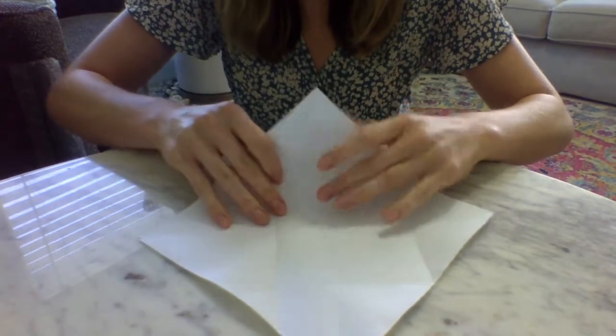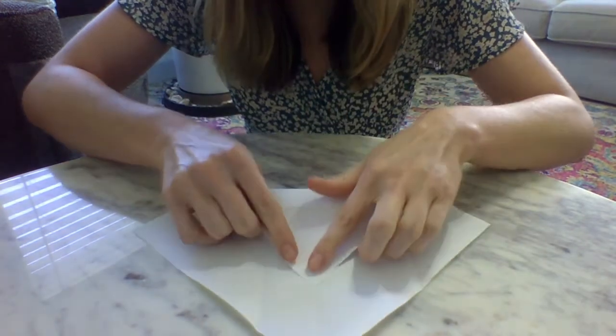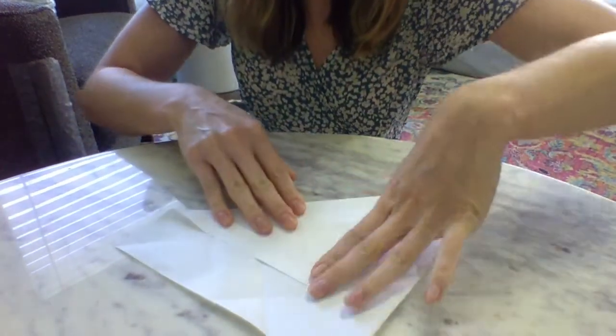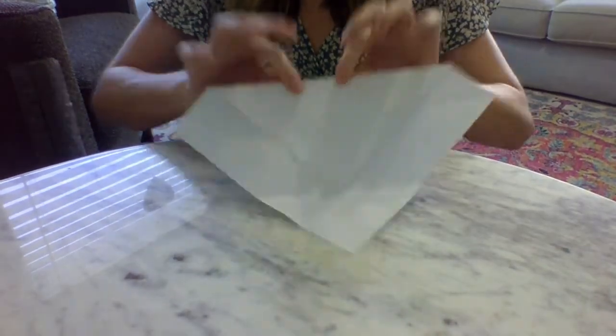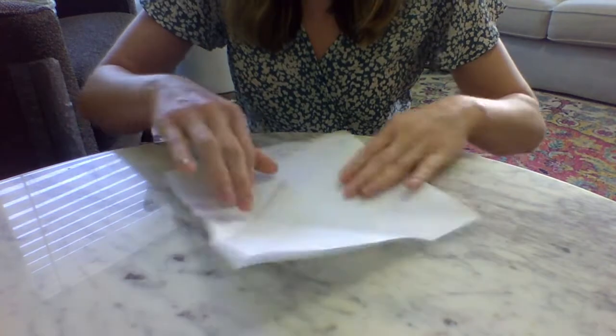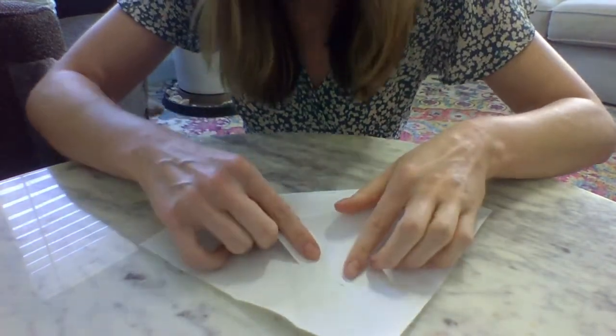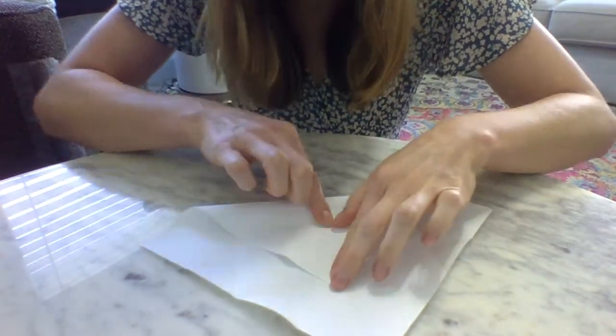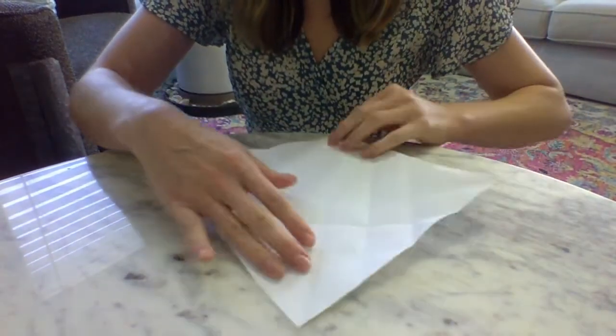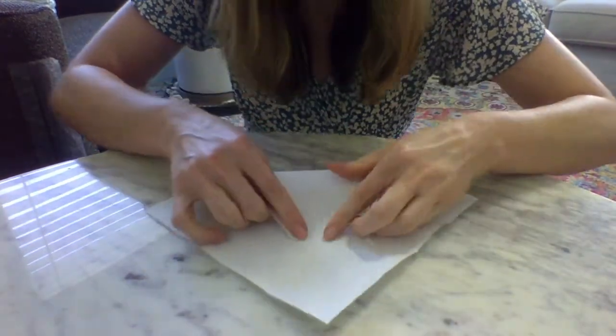Rotate your paper and fold this corner so that it meets that line. And keep going around to all four corners. I bet you're starting to see lots of folds on your paper now.